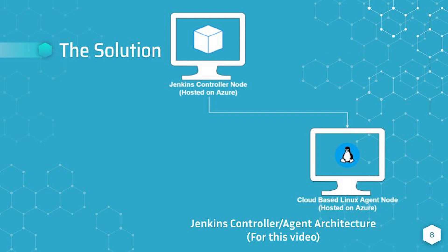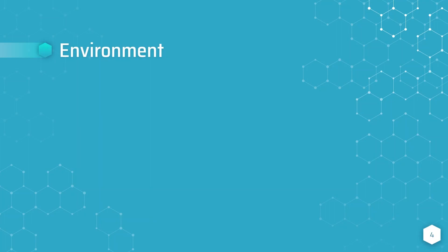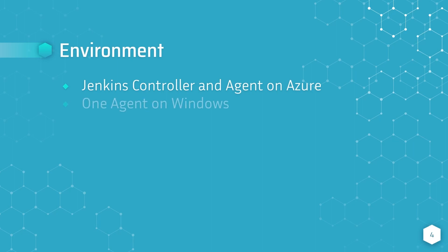If we take a look at the architecture shown here, the Jenkins controller node is the Jenkins server that we've already configured in previous videos. We will be adding a Linux agent node in this video. After we've configured our Jenkins agents, the Jenkins controller will be able to schedule builds on each of the Jenkins agents according to the job configuration. The Jenkins controller and one of the Jenkins agent nodes are hosted on Azure, and one additional agent will be run on my Windows PC.